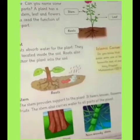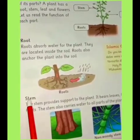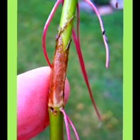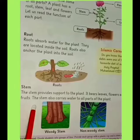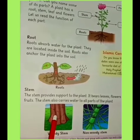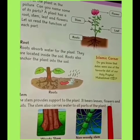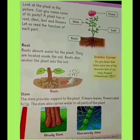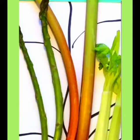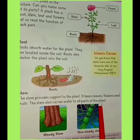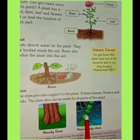Now come to the next topic, stem. Stem means tana. Sabse pehle jadon se jo paudha nikalta hai mitti se bahar, us hisse ko tana kehte hain. The stem provides support to the plant. It bears leaves, flowers and fruit. Tana paudhe ko sahara deta hai aur yeh patton, phoolon aur falon ka bojh uthata hai. The stem also carries water to all parts of the plant. Aur tana paudhe ke tamam hisson tak paani pahunchata hai.